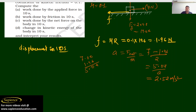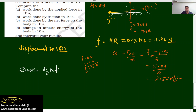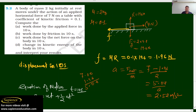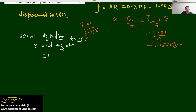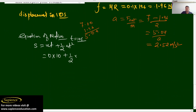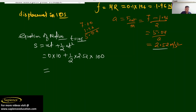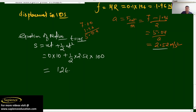Using the equation of motion, we can find displacement in 10 seconds. s = ut + ½at². The initial velocity is 0 since the body starts at rest. So s = 0 × 10 + ½ × 2.52 × (10)² = ½ × 2.52 × 100 = 126 meters. So the displacement in 10 seconds is 126 m.